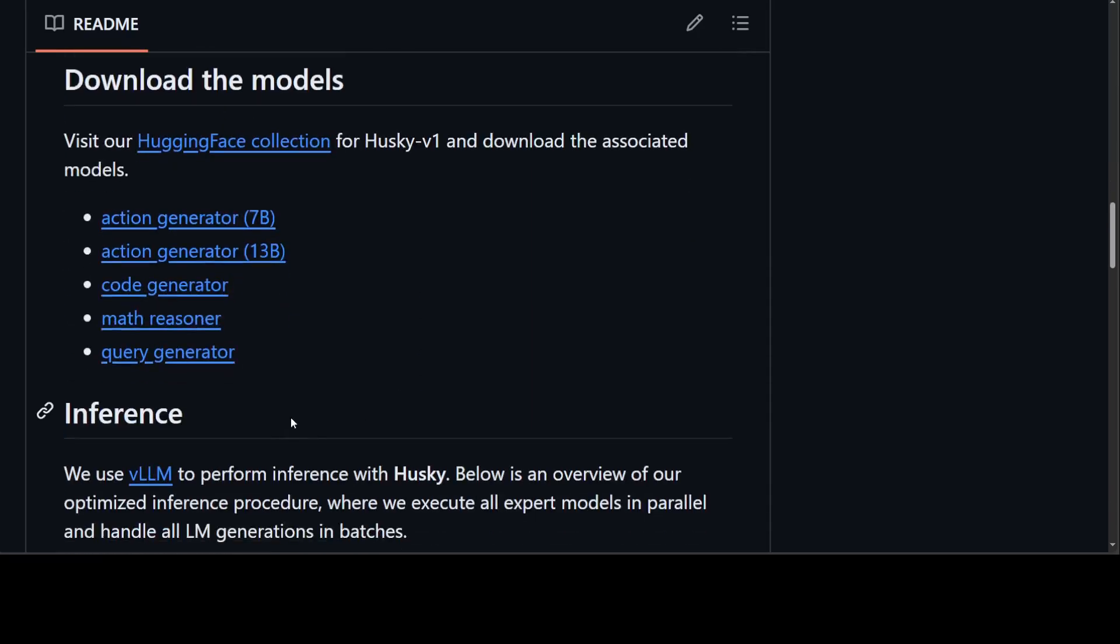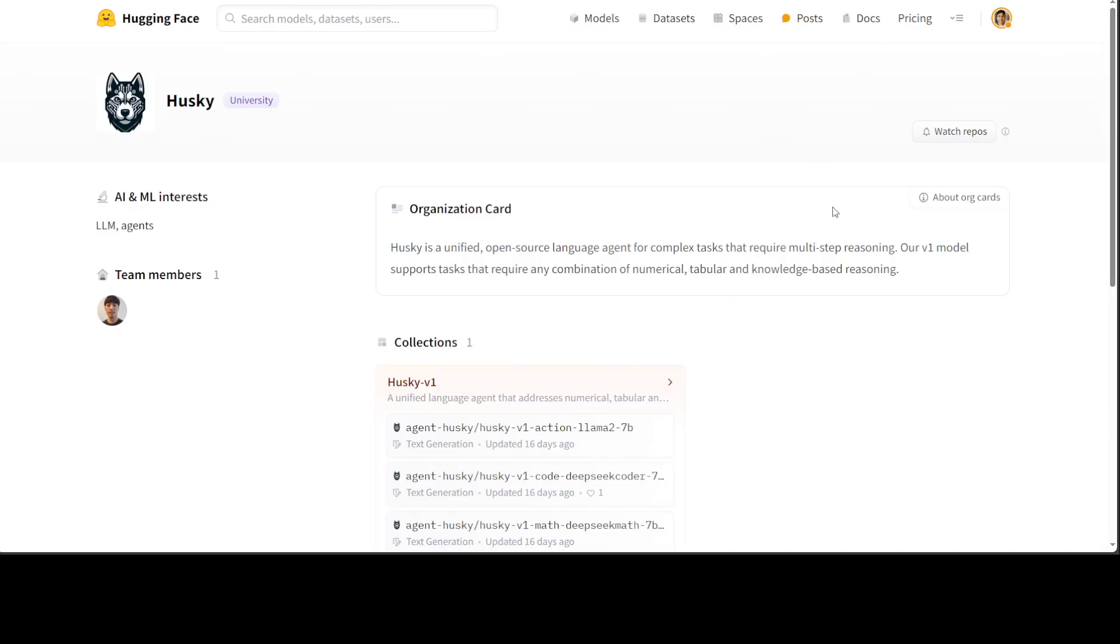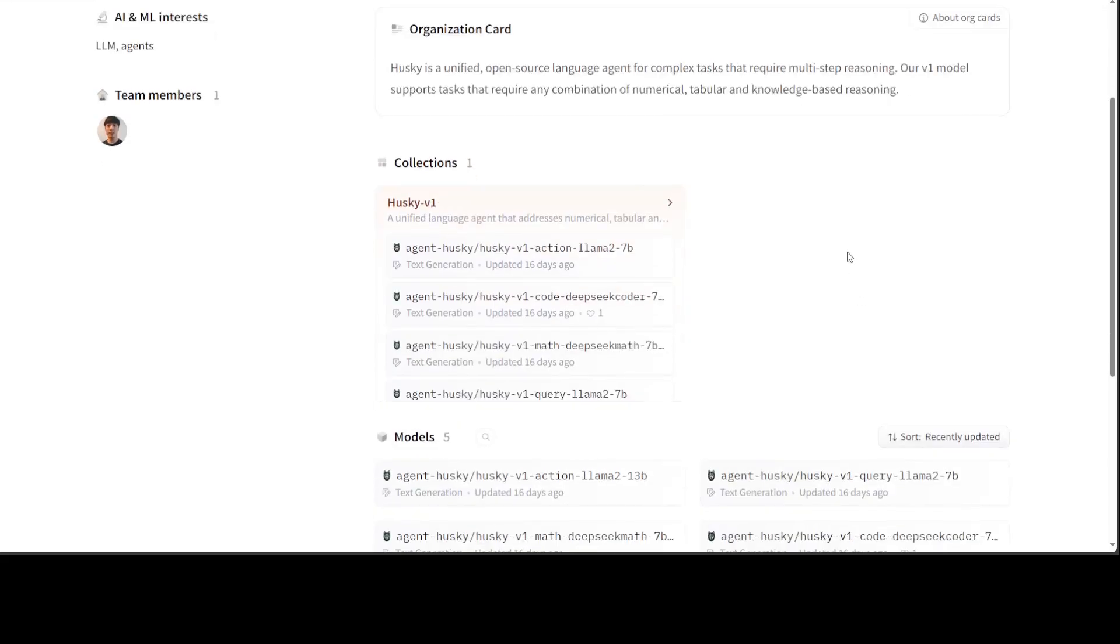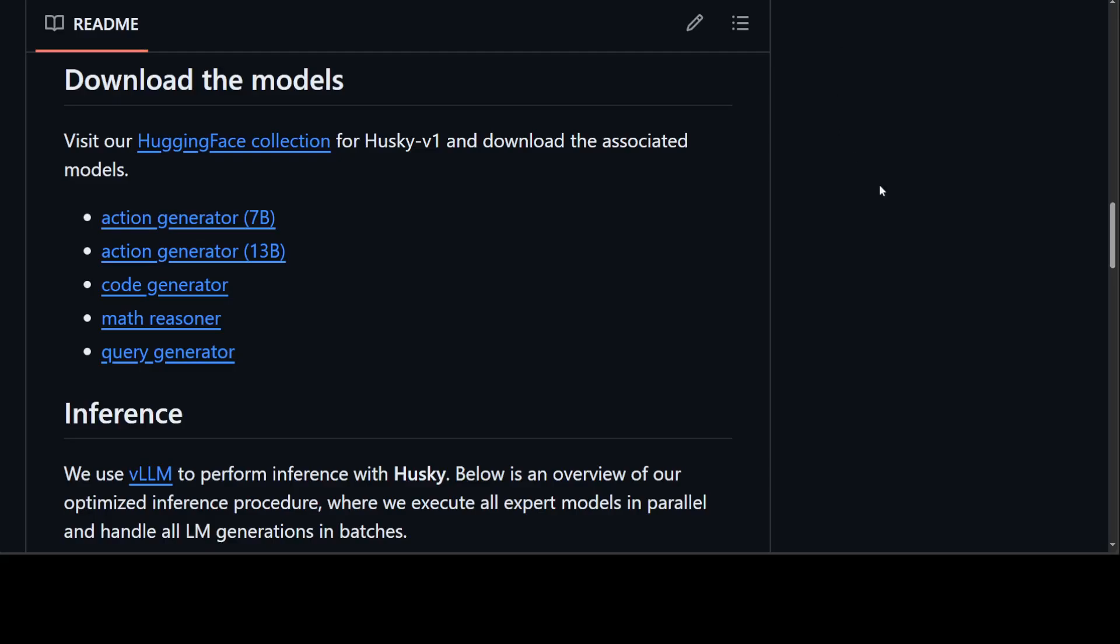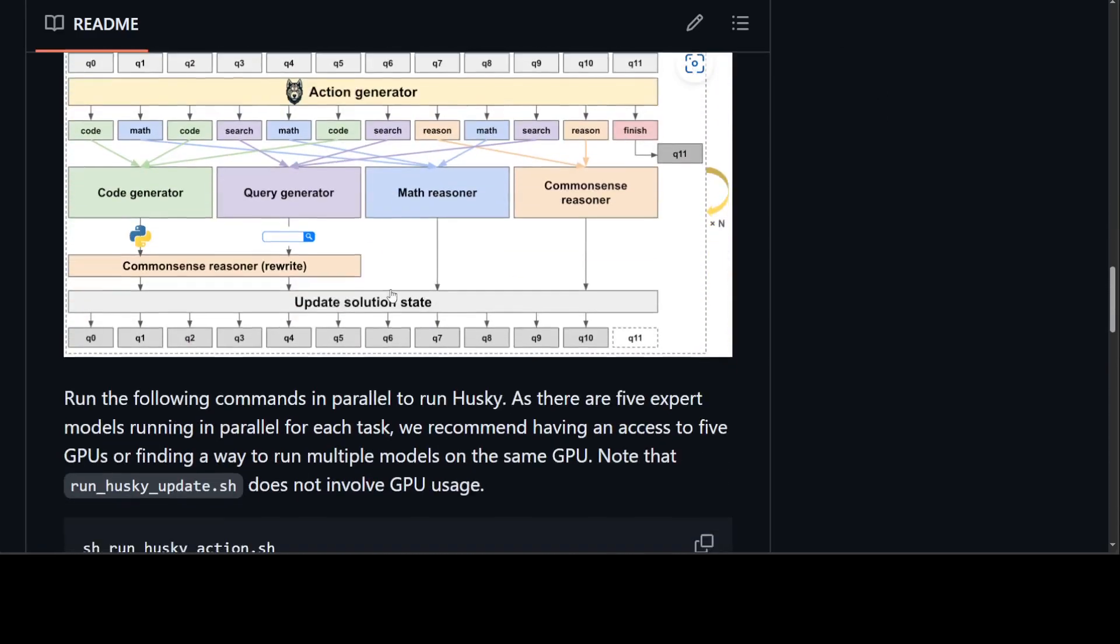Install all the requirements, and then you need to download all of these models. Some are 7 billion, some are 13 billion. So this is the Hugging Face page, and again I will drop the link to it in video description. From there you would need to download all of these models once you have done it.